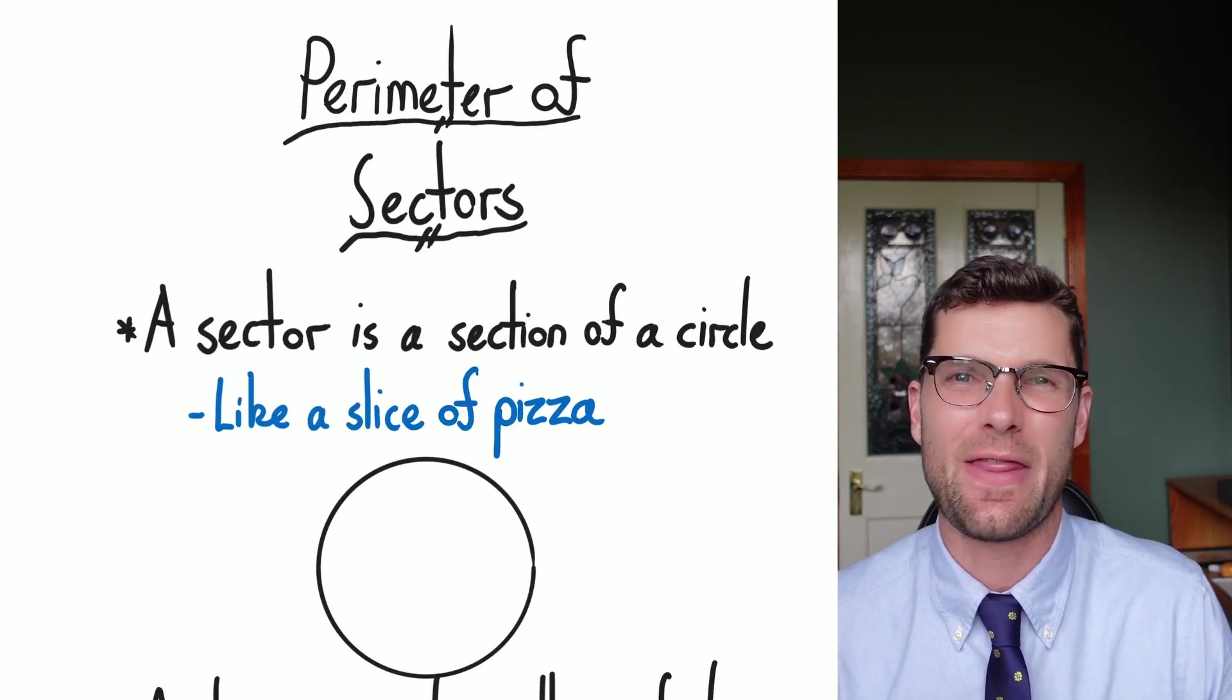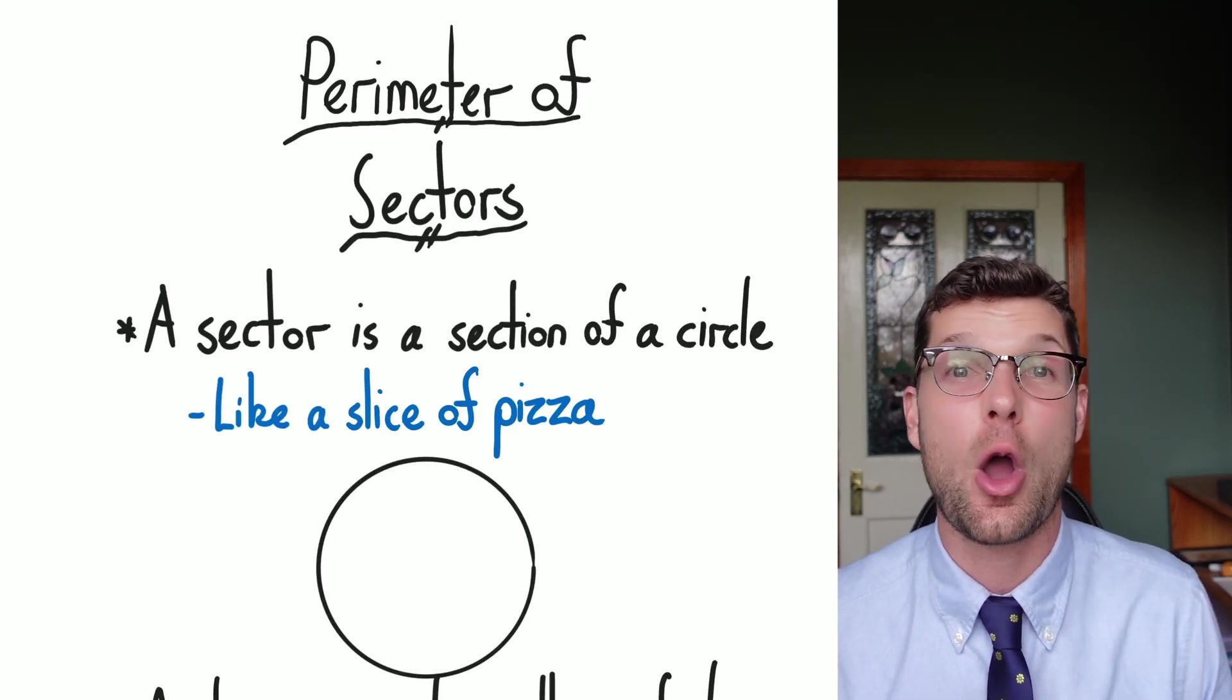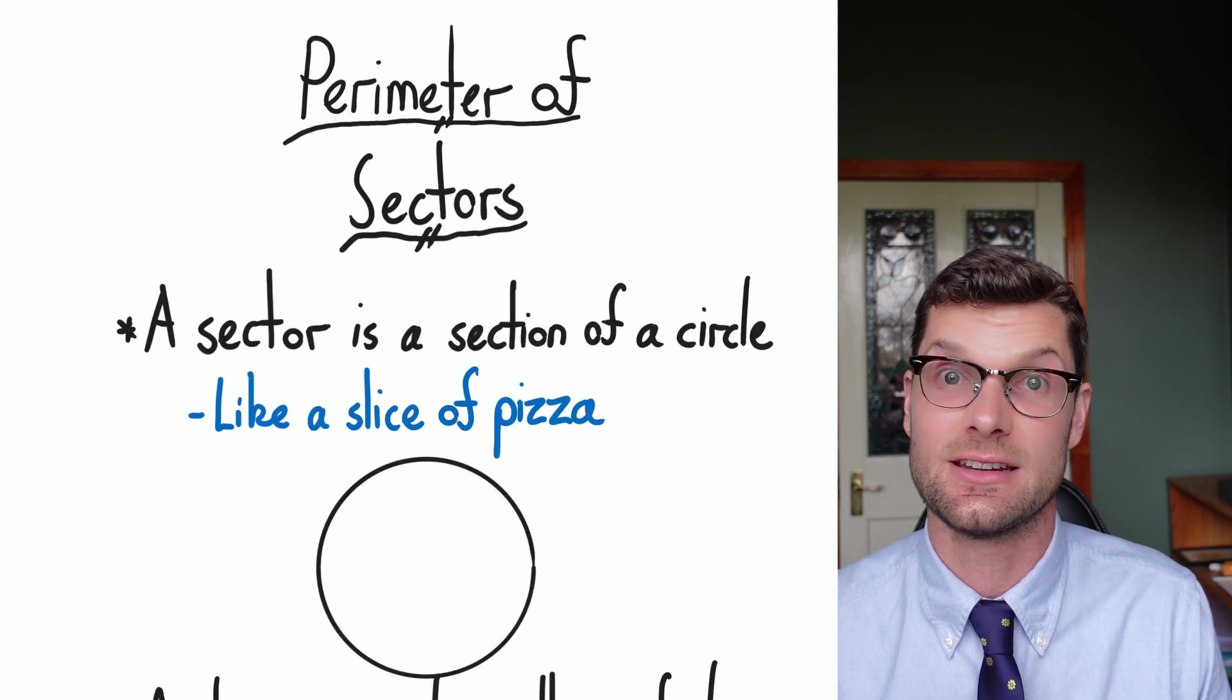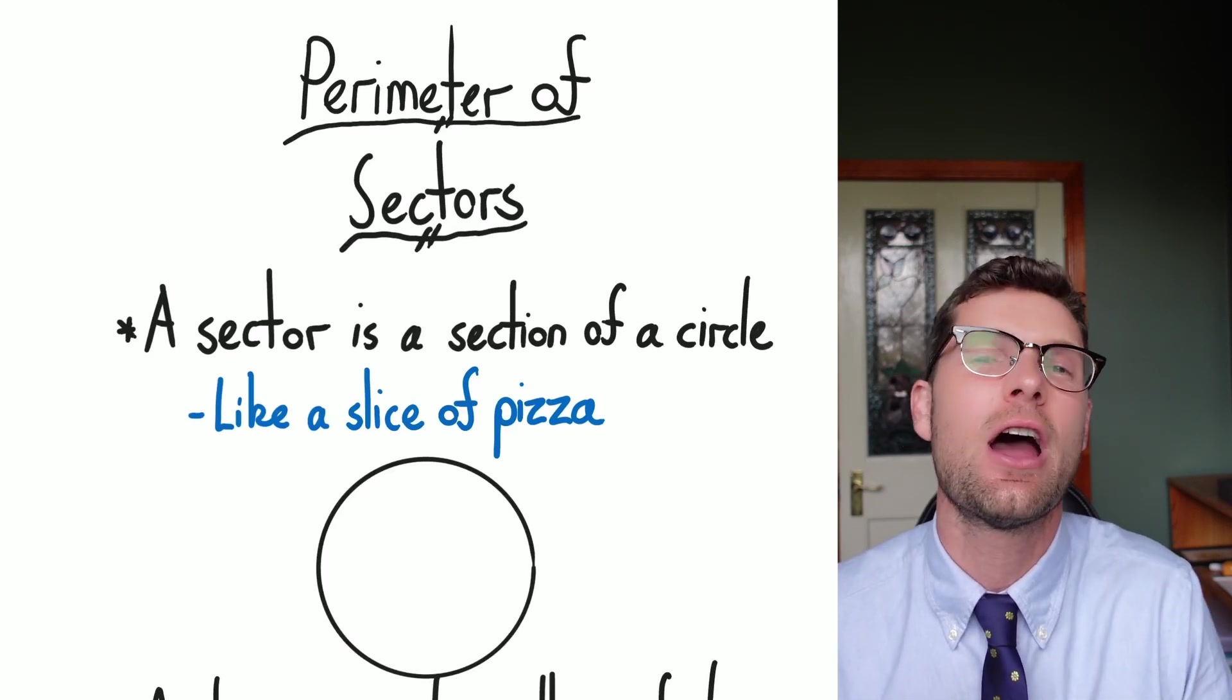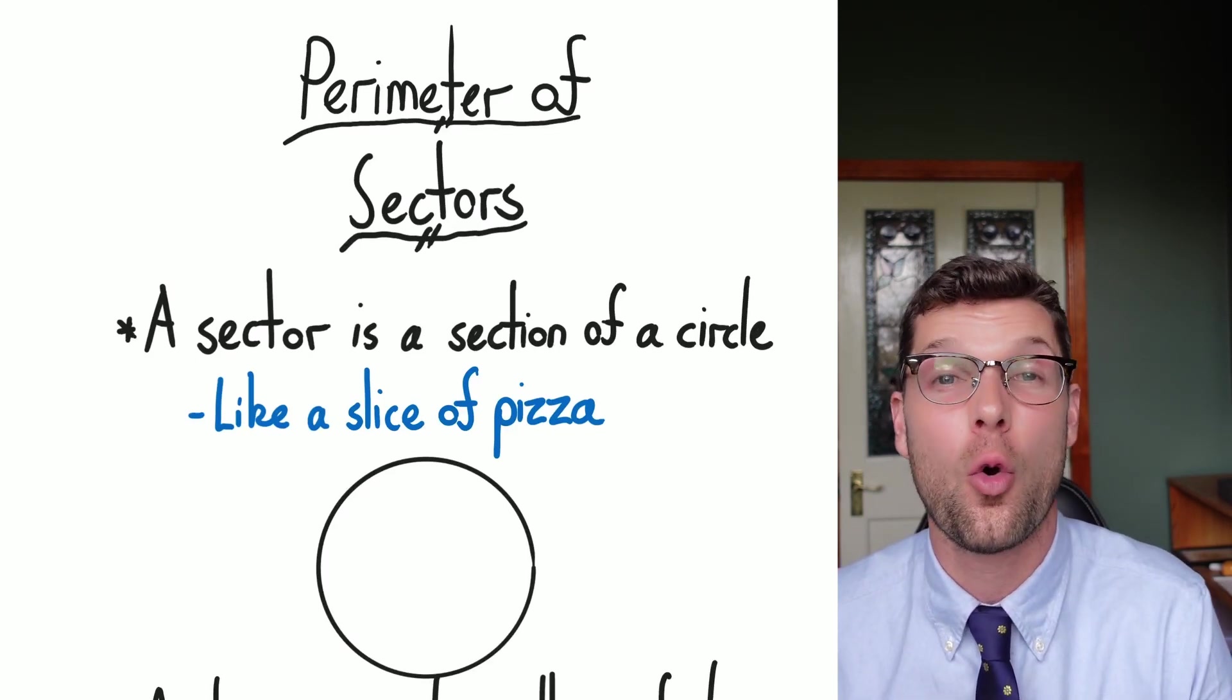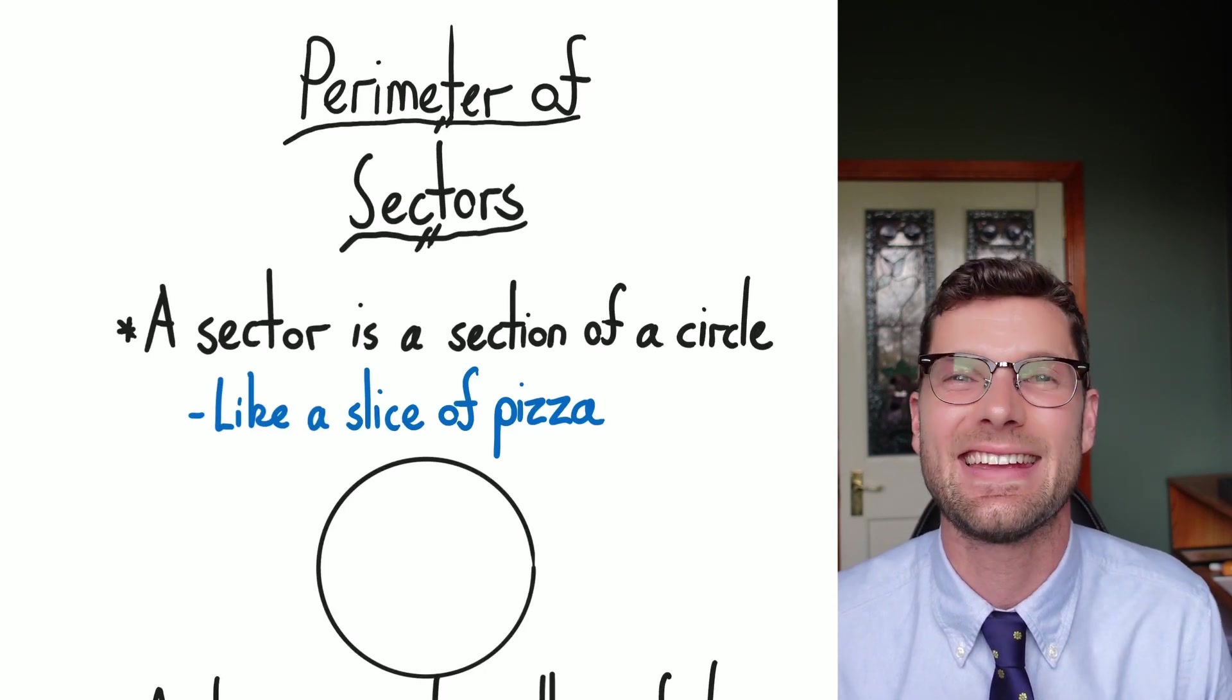What's going on everyone, you're back with Jono for another quick math lesson. Today we're going to work out how to find the perimeter of sectors or sections of a circle that's not the entire way around or one of the semicircles that we looked at in the last lesson.